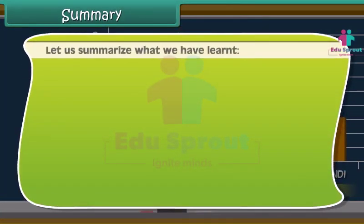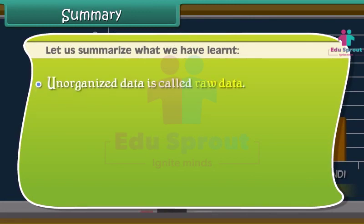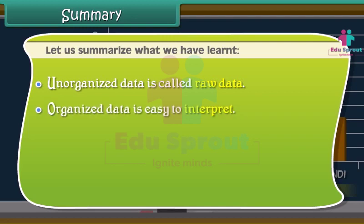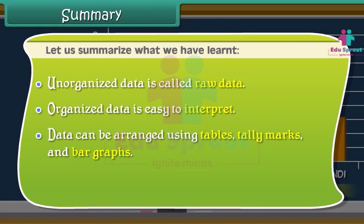Let us summarize what we have learnt. Unorganized data is called raw data. Organized data is easy to interpret. Data can be arranged using tables, tally marks, and bar graphs.